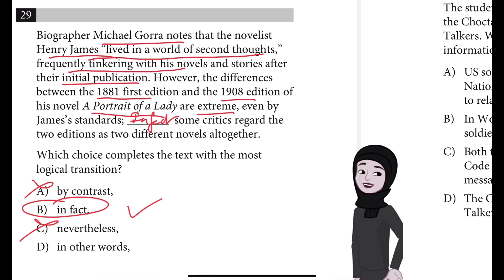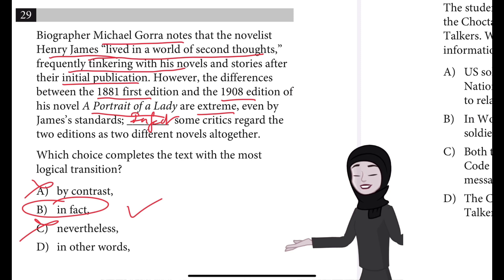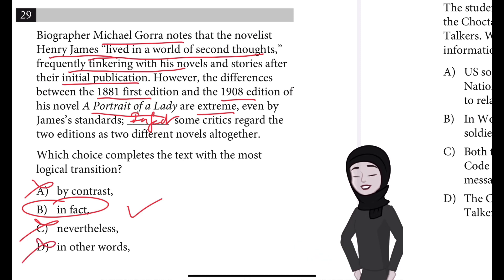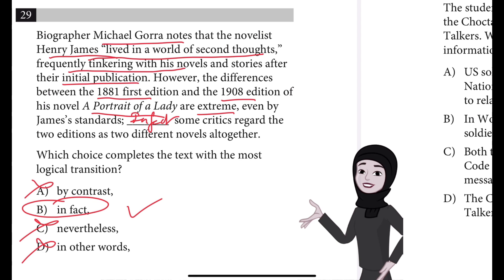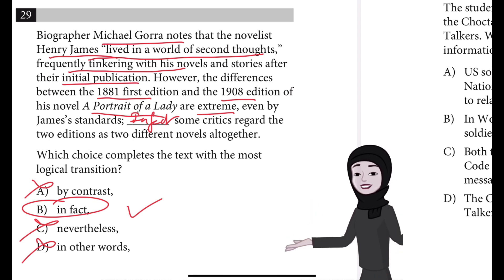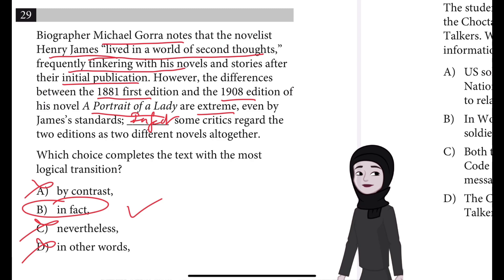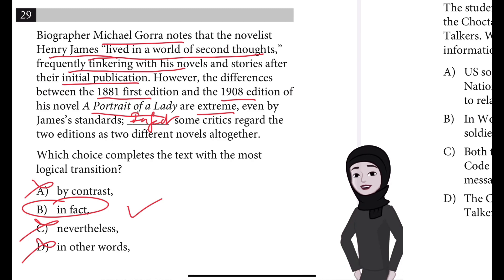Instead, the critics' opinion offers additional emphasis in support of that claim. D is incorrect because 'in other words' illogically signals that the claim at the end of this sentence is merely paraphrasing the previous claim about the differences between the two editions. The critics' opinion adds new information to the previous claim rather than simply paraphrasing it.